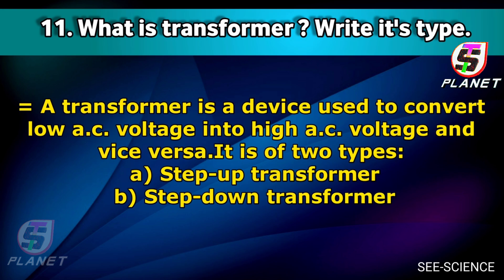Question number eleven: What is a transformer? Write its types. Answer: A transformer is a device used to convert low alternating voltage to high, or high alternating voltage to low.